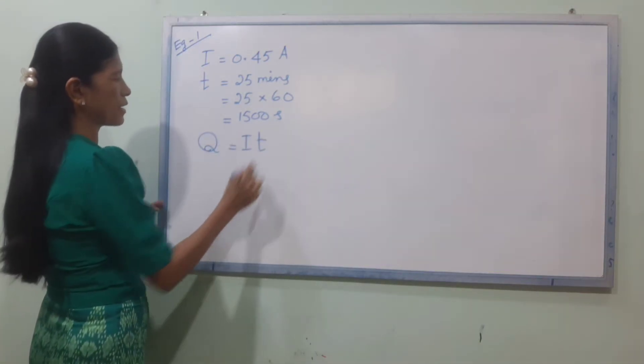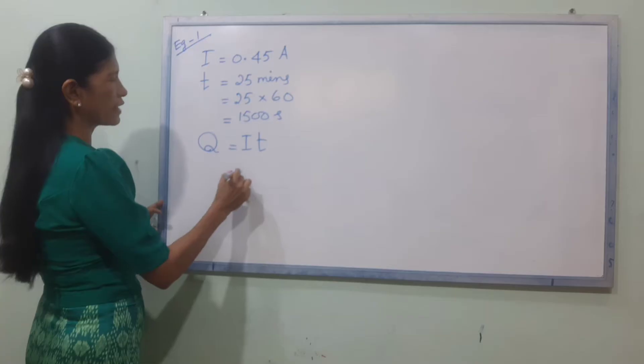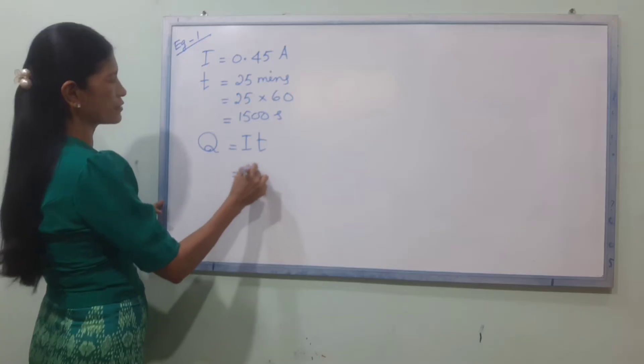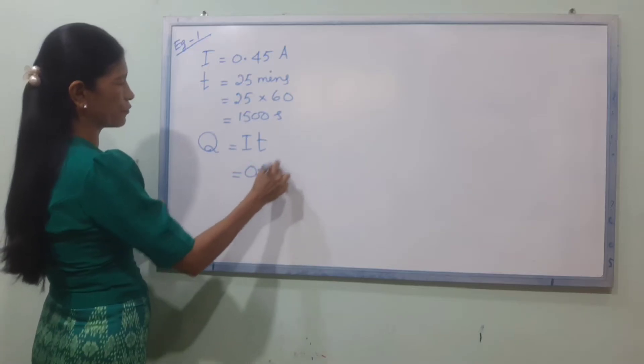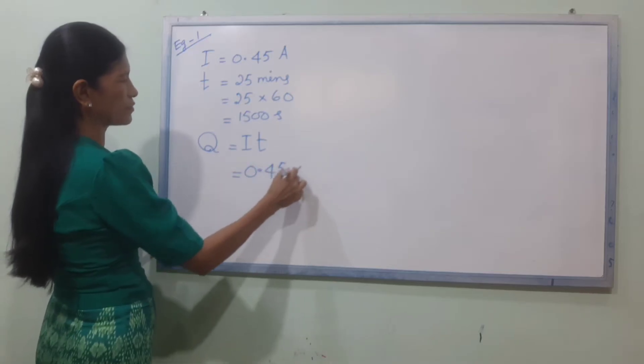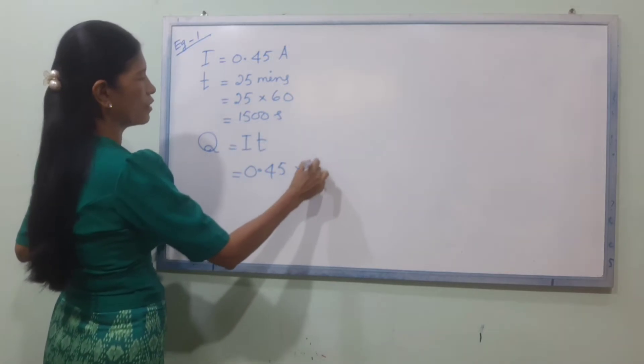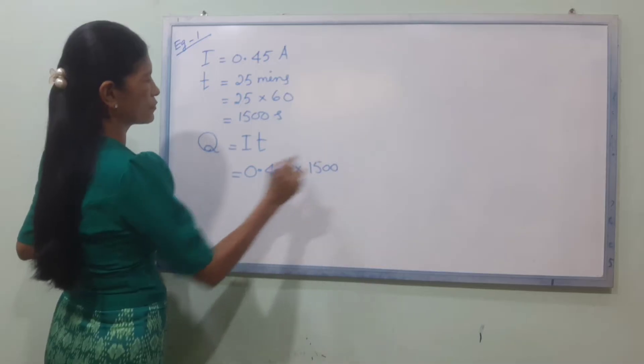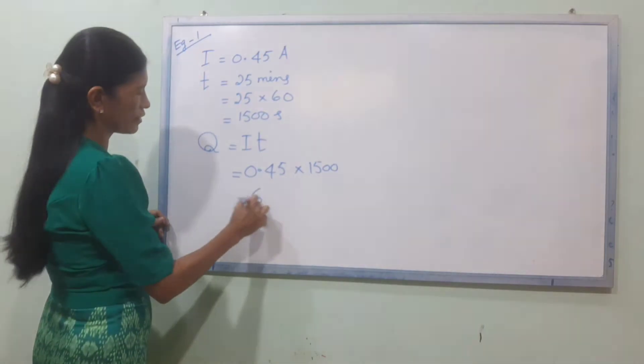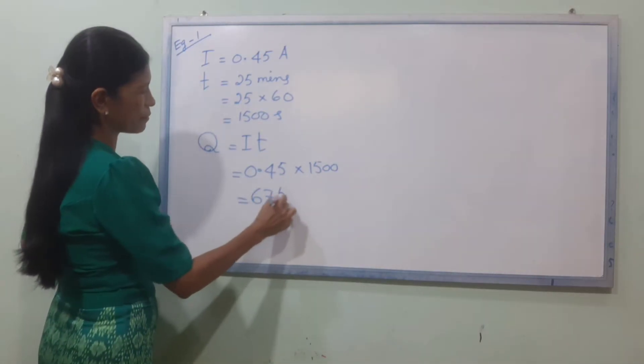Using the first law formula: Q equals I times t. Q equals 0.45 mA multiplied by 1500 seconds, giving Q equals 675 mC.